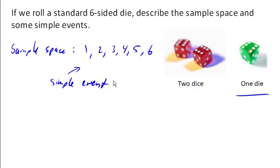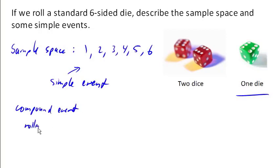It is also possible to talk about things called compound events. Compound events would be something like rolling something larger than 4. In that event, there are two possible ways that you can achieve that event — you can either roll a 5 or a 6.